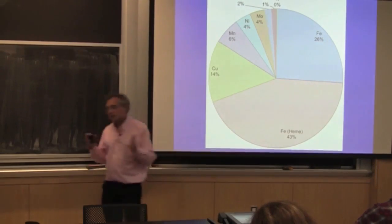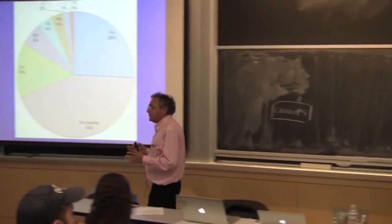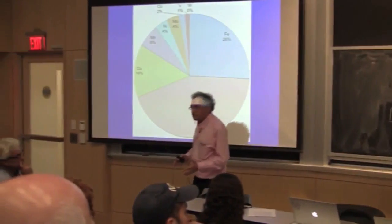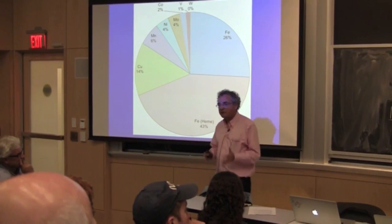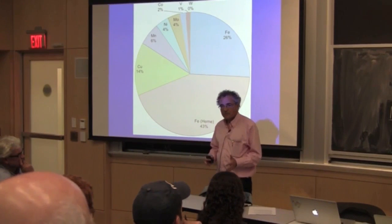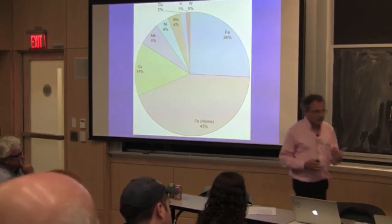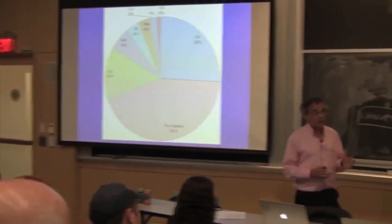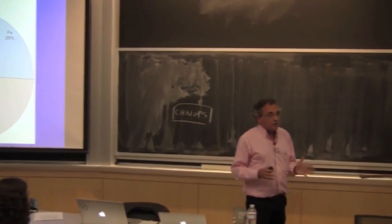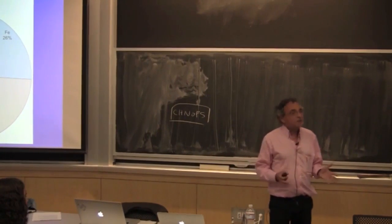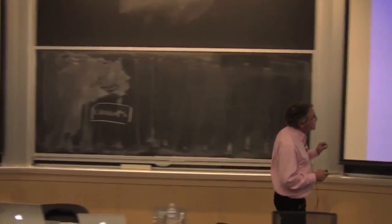If you want to know this in detail, please read the Bakerian Lecture by R.J.P. Williams — the 1981 Bakerian Lecture called 'The Natural Selection of the Chemical Elements.' It is one of the most beautiful essays I have ever read. Bob Williams was an amazing person — he's 90 years old now, but just phenomenal.